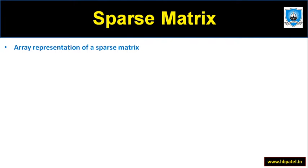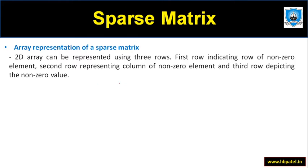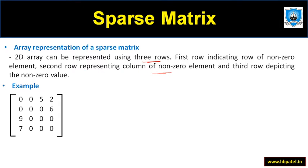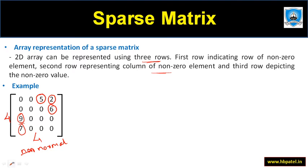Let us understand the array representation of sparse matrix using a two-dimensional array with rows and columns. The first row indicates the row of the non-zero element, the second row indicates the column. Let us take an example with the same matrix — a normal array having all elements, zero as well as non-zero. If you look carefully, we have only five non-zero elements, so we only need to handle these five.